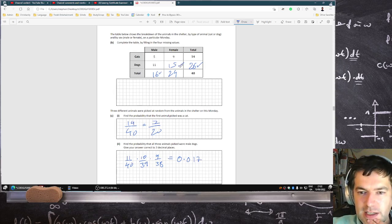So that has to be 15. 9 and 15 makes 24. You can double check the answers because 14 and 26 makes 40 and 16 and 24 makes 40.